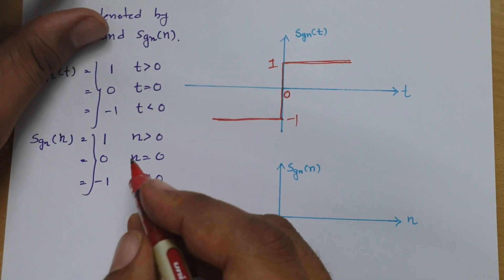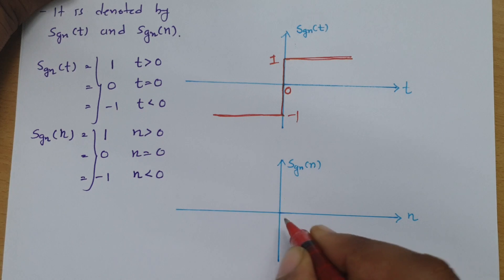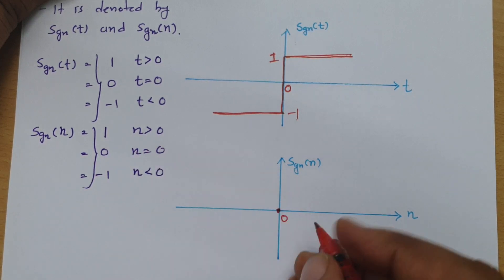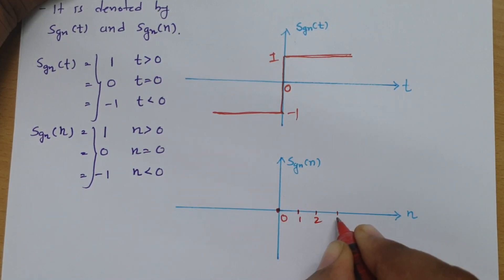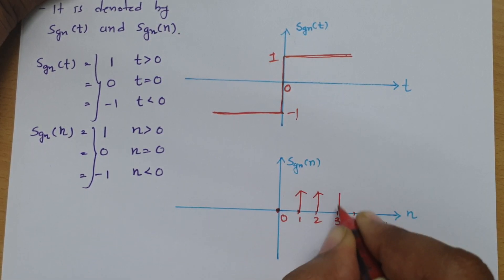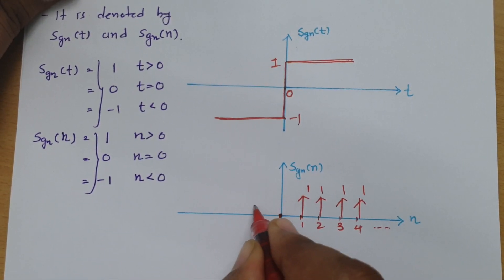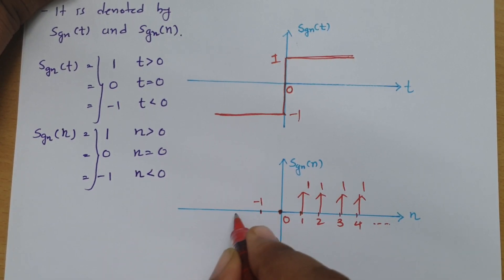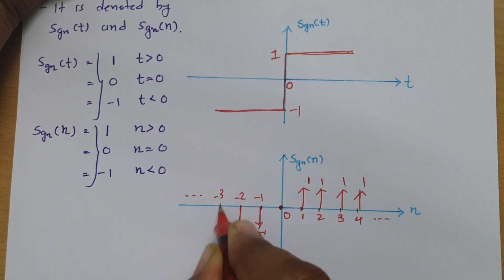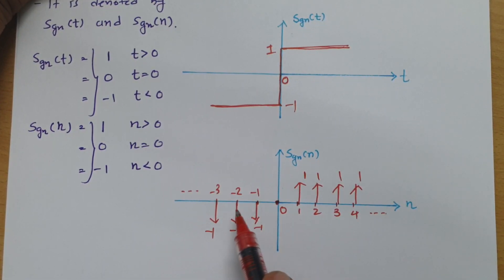Now when we talk about signum function for discrete time, at n equal to 0 it will be 0. For n greater than 0 it will be 1, so for n = 1, 2, 3, 4 we will be finding its value is 1, and for n less than 0 its value is minus 1. So you will be finding the signum function in the discrete domain looks like this.